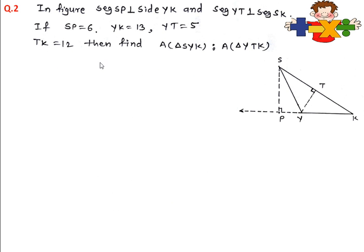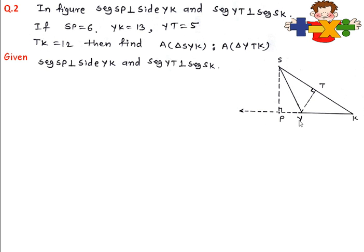In the second question: in the figure, SP is perpendicular on YK and YT is perpendicular on SK. SP is given as 6, YK is given as 13, YT is given as 5, and TK is given as 12. Let us write the values: SP is 6, YK is 13, YT is 5, and TK is 12.